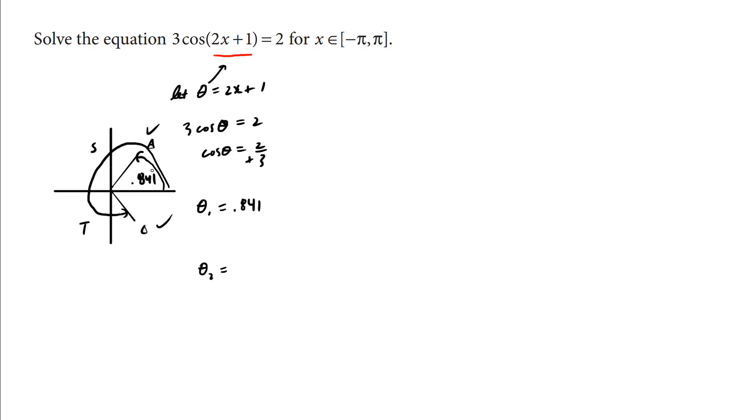And theta 2 is going to be half a turn, pi radians. It's going to be a full turn, 2 pi radians. Take away that reference angle. It's going to be 2 pi minus 0.841 radians, which is approximately 5.44 radians. And keep all the digits of accuracy on your calculator.